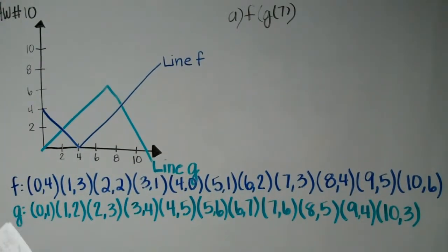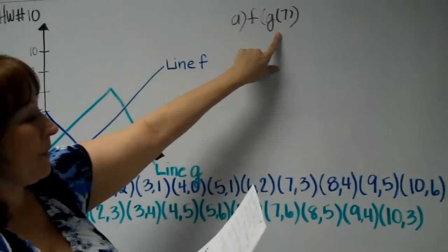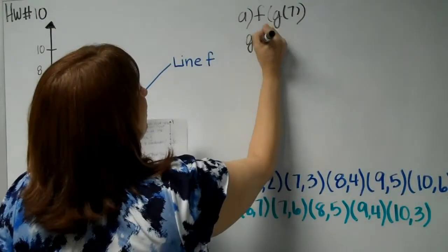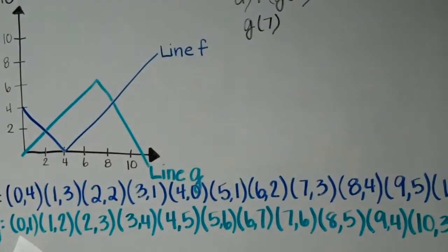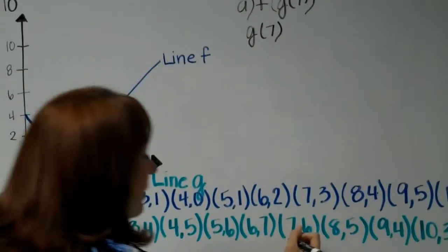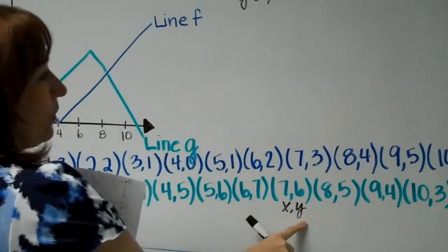Now going to F of G of 7. Solve with the info that you already have. What is G of 7? All you're going to do is look at line G, which is the green line, look for the X coordinate 7. This is your X and this is your Y. What is the Y coordinate? 6.